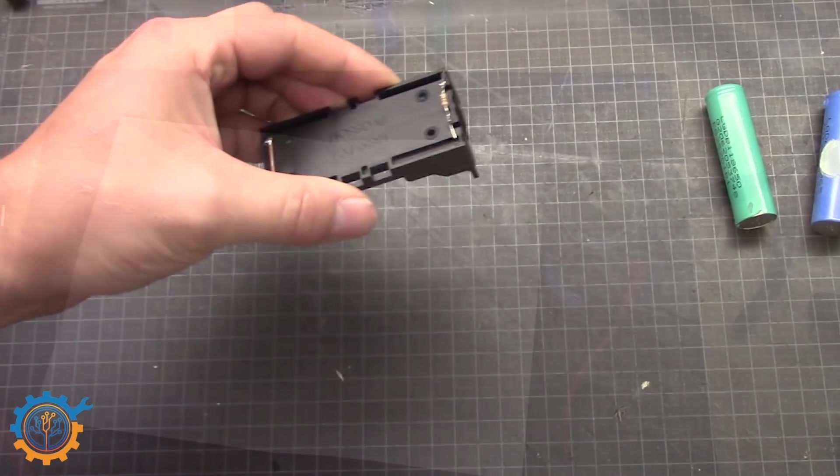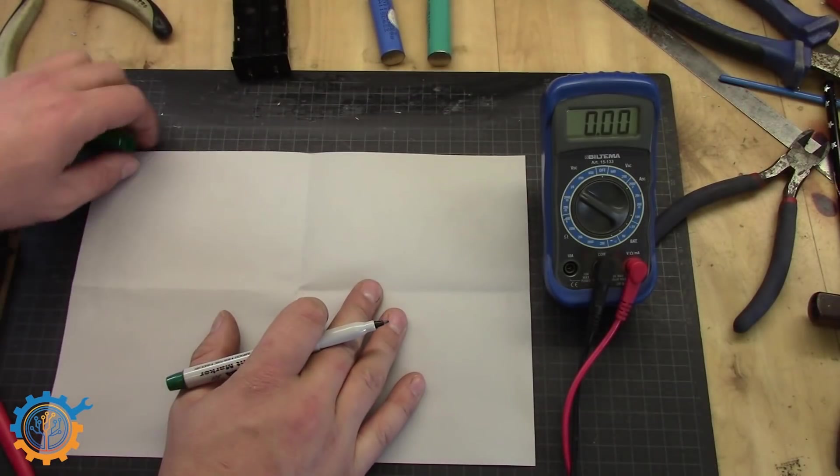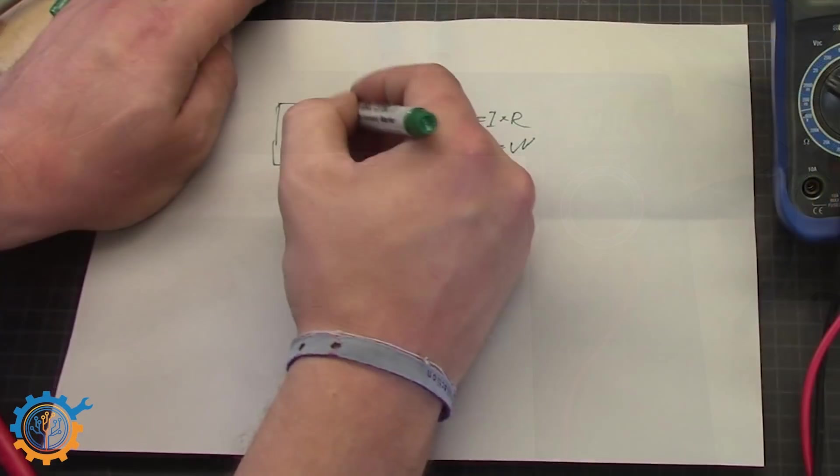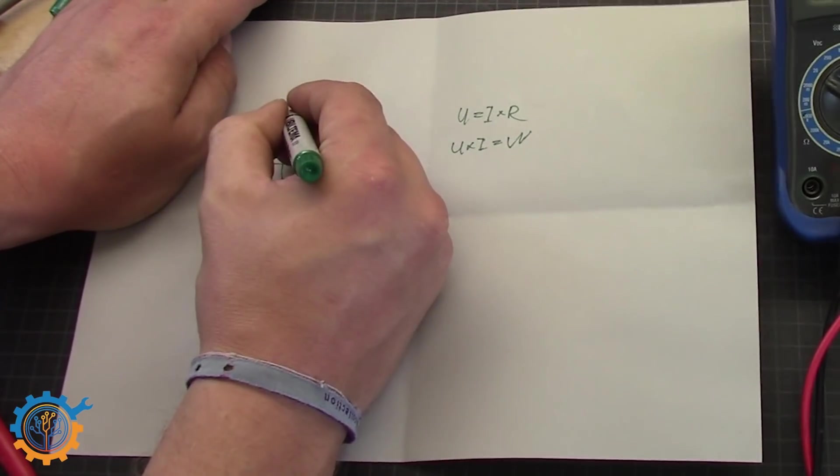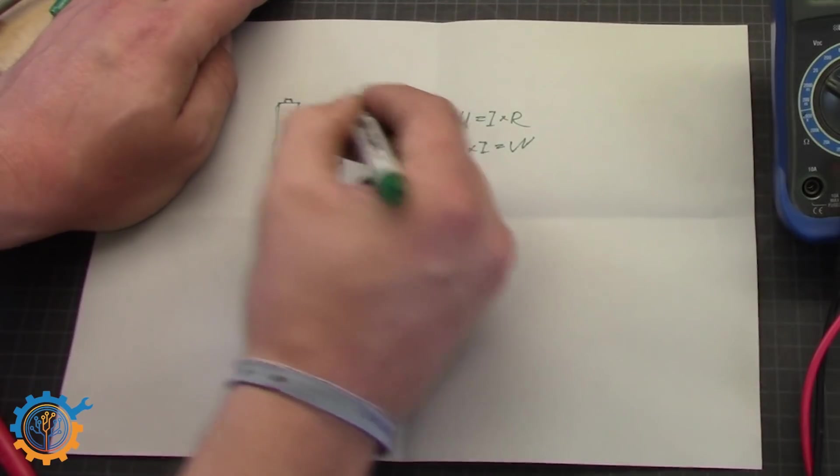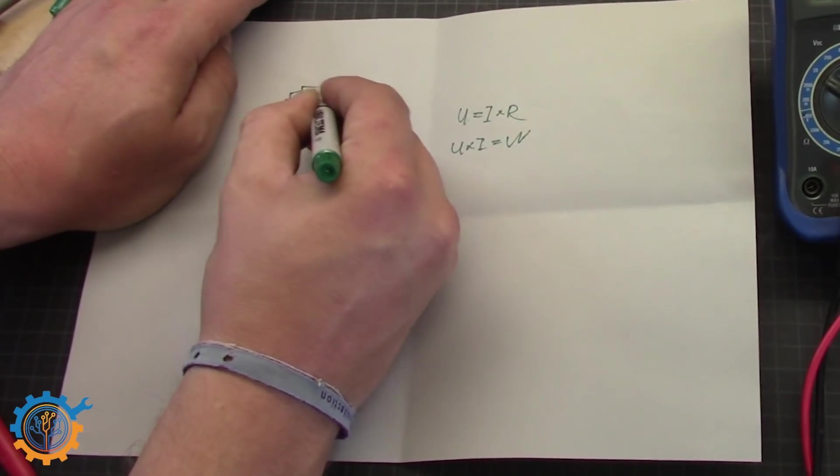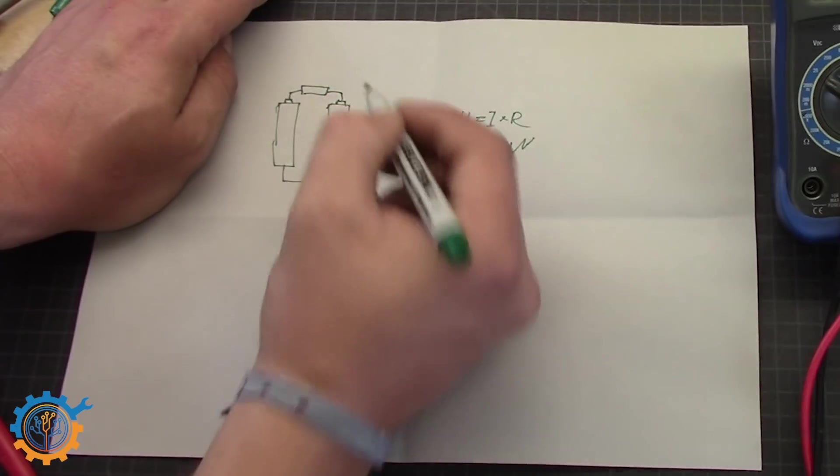So let's take a look at how this is done. But first we need to do some calculations. So let's calculate what type of resistance that we need. Let's have both batteries here. We are connecting the negative side. And the positive side is connected via a resistor.